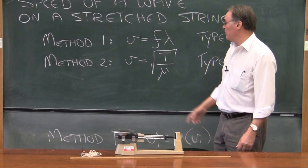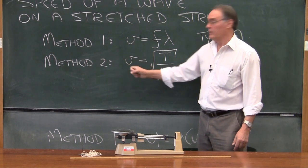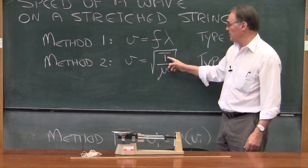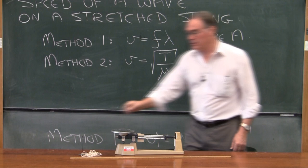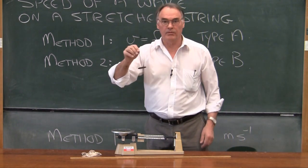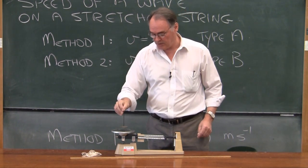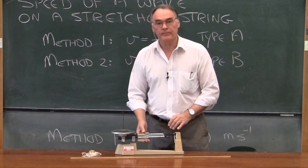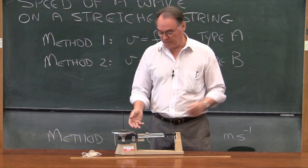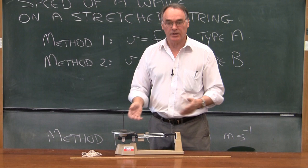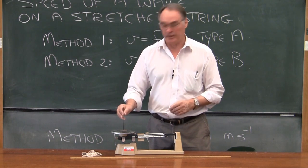When you do Method 2, you measure the tension in the string by measuring the mass of the weight that was used to tension the string on a triple beam balance like this. And then you've been given the gravitational acceleration G, so you can calculate the tension in the string.